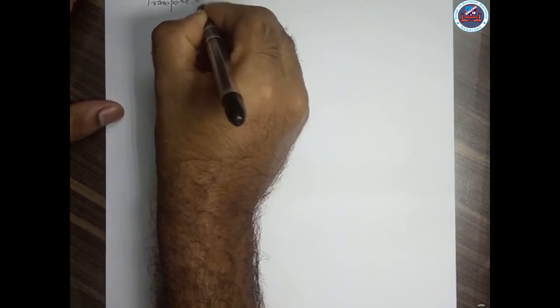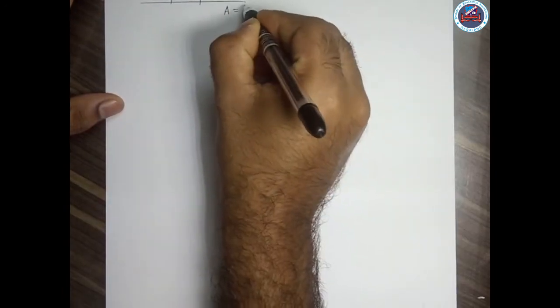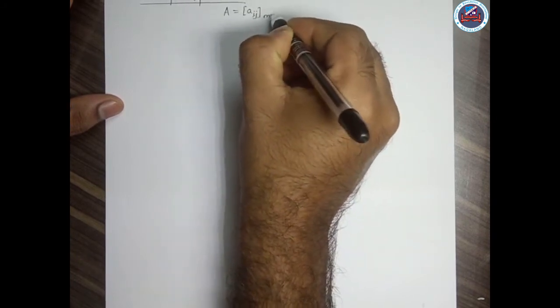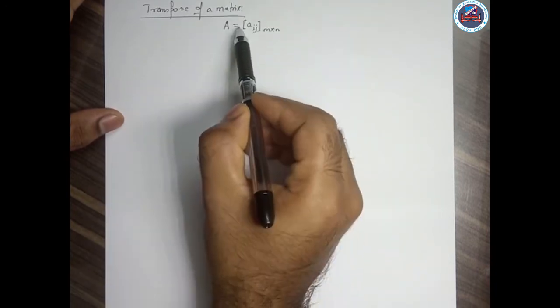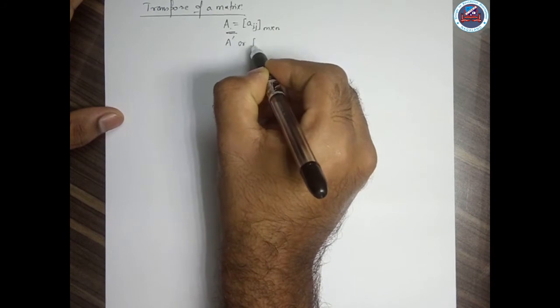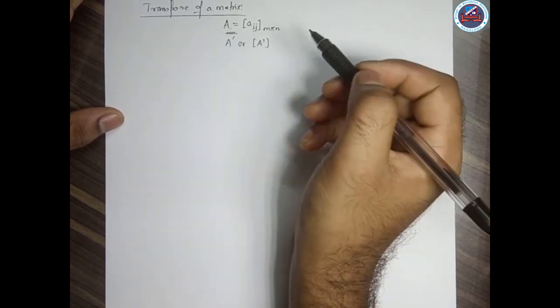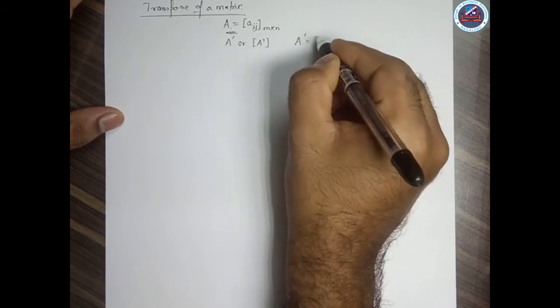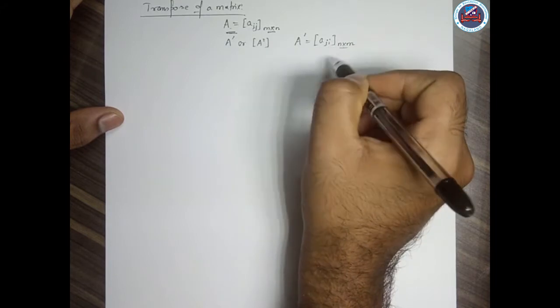The first topic is transpose of a matrix. If you consider a matrix A given by A_ij with order m by n, the transpose of a matrix is the interchanging of the rows and columns of this matrix. It is denoted by A' or A^T. If matrix A has order m by n, then the transpose of A is given by A_ji with order n by m.